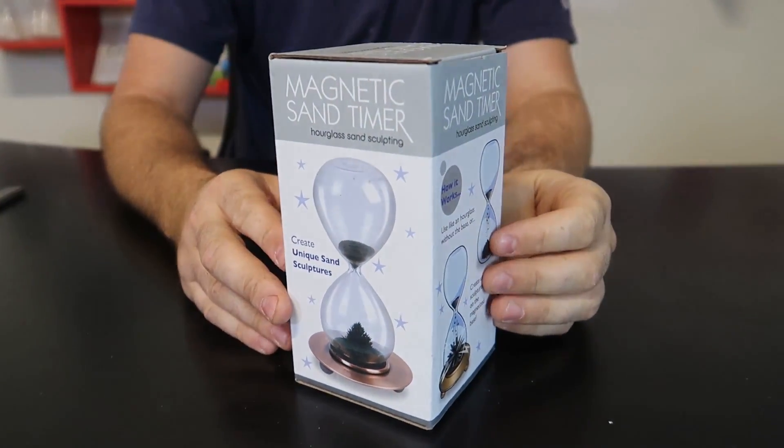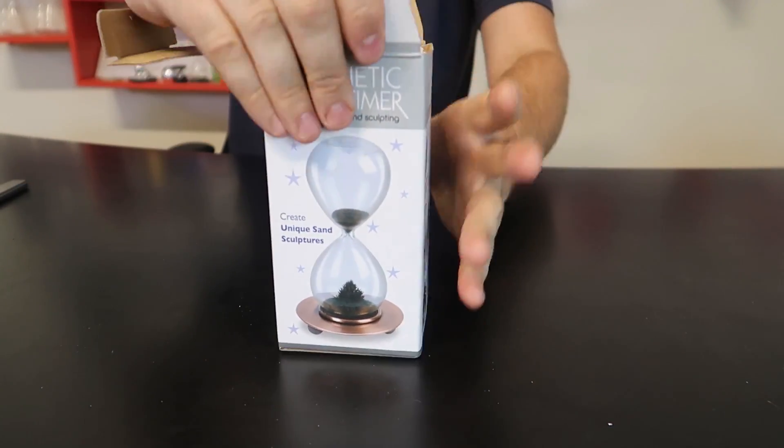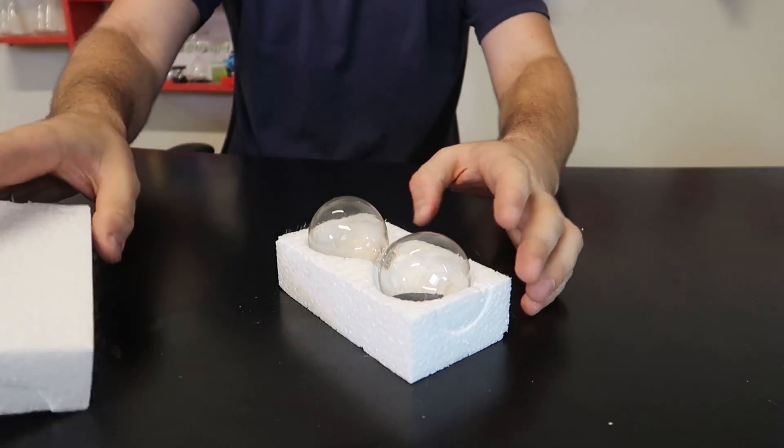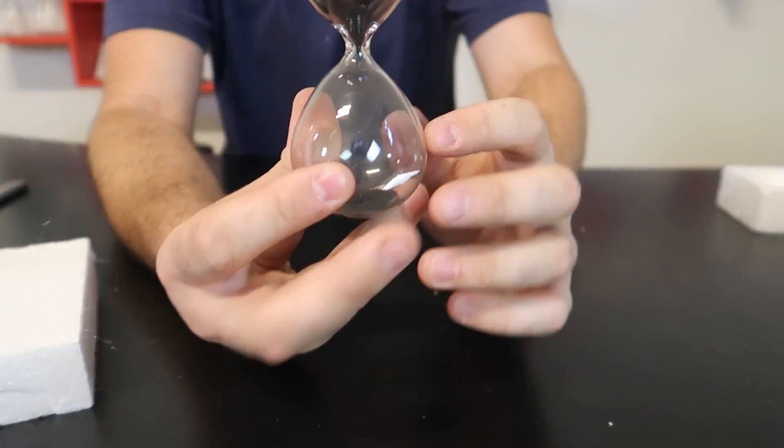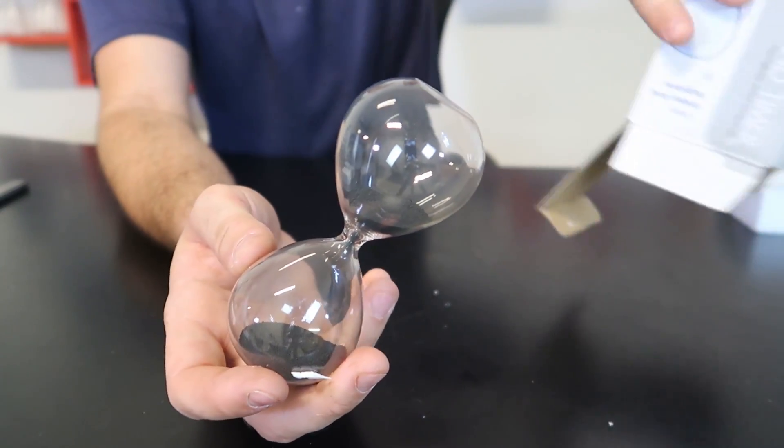Next I have here magnetic sand timer. This is actually a very cool toy. I used to have one of this, I broke it. So let's see how it works. Boom. Looks like a regular black sand timer, but there's a hidden feature to it.